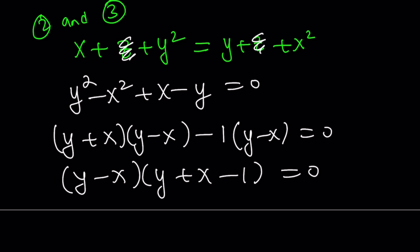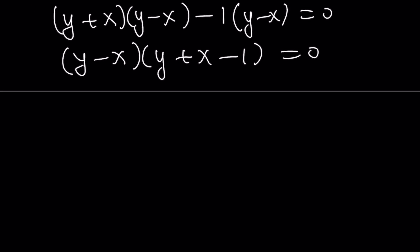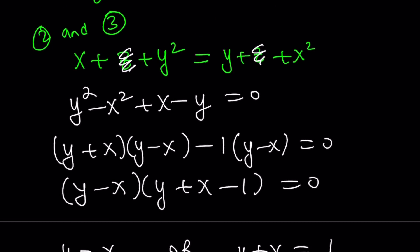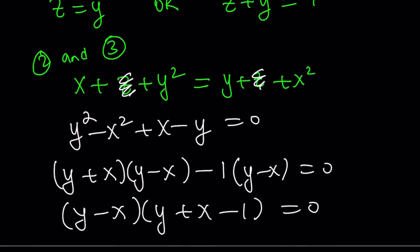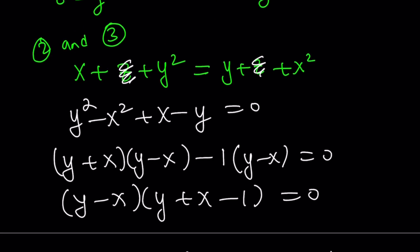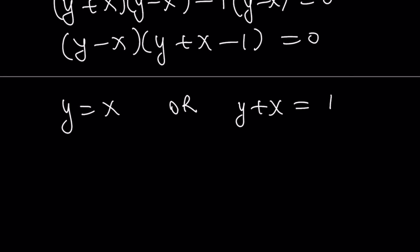And similarly, we can take out y minus x and get y plus x minus one equals zero from here. This is also nice, just like the one and two. This gives us either y equals x or y plus x equals one. So I kind of got like two statements: z equals y or z plus y equals one, or we got y equals x or y plus x equals one. So we're going to kind of look at these different cases.